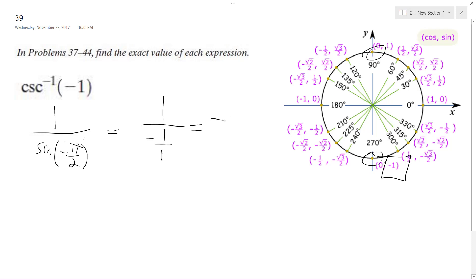Which is equal to just negative pi. Oh, which is equal to negative 1. So that just means it's going to be negative pi over 2.